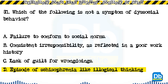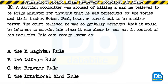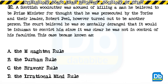Question 82: A Scottish woodcutter was accused of killing a man he believed to be the prime minister, thinking he was persecuted by the Tories and their leader Robert Peel — who turned out to be another person. The court believed he was so mentally deranged that it would be inhuman to convict him, as he was not in control of his faculties. This case became known as: a) the Monoton Rule, b) the Durham Rule, c) the Braunner Rule, d) the irrational mind rule. The answer is A, the Monoton Rule.